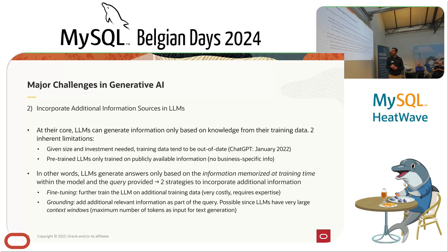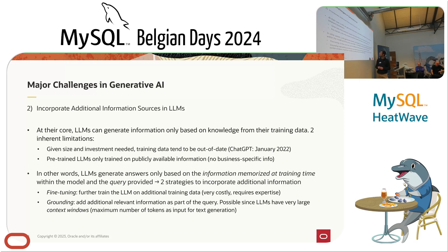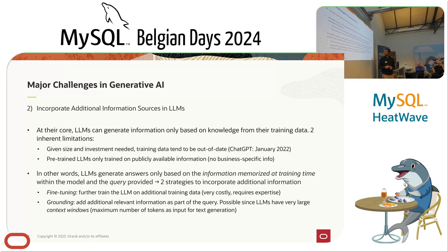Basically, what happens is they store all the knowledge from the training data within these billions of parameters. But these are two inherent limitations. Given the size of the investment needed to collect and process this data, the training data tends to be out of date relatively fast, because you will not repeat all this exercise every month or so. In fact, ChatGPT's training data contains information only until January 2022, which means — a typical example — if you ask ChatGPT who won the Football World Cup, it couldn't answer it. Nowadays it can, but through other means, not by the LLM by itself.